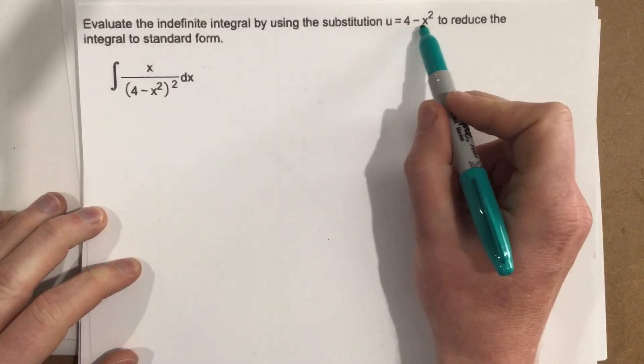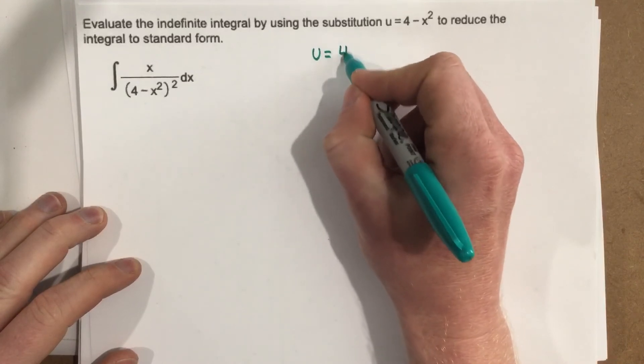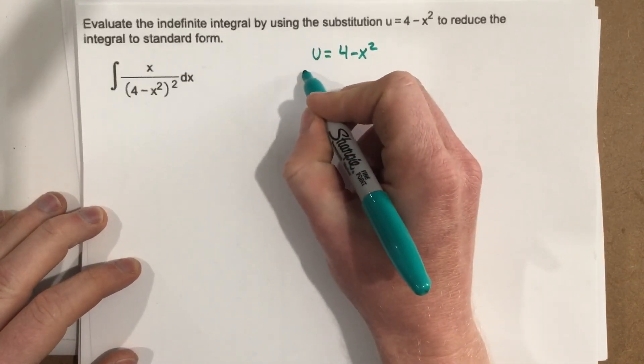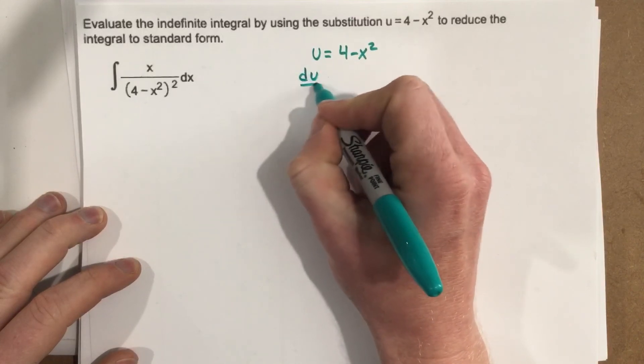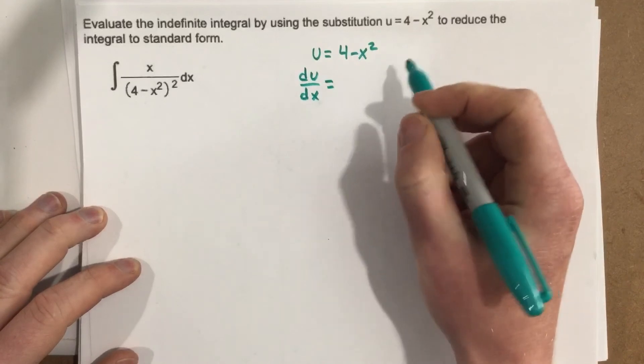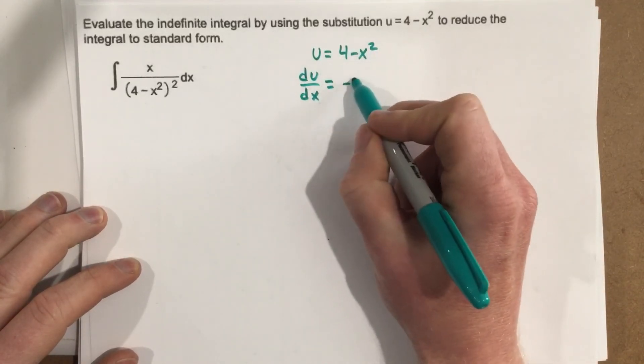So they tell us u is 4 minus x squared. So let's go ahead and write that u equals 4 minus x squared. So that means that du over dx, so derivative of u with respect to x is equal to, well if I do the derivative over here that's 0, that's negative 2x.